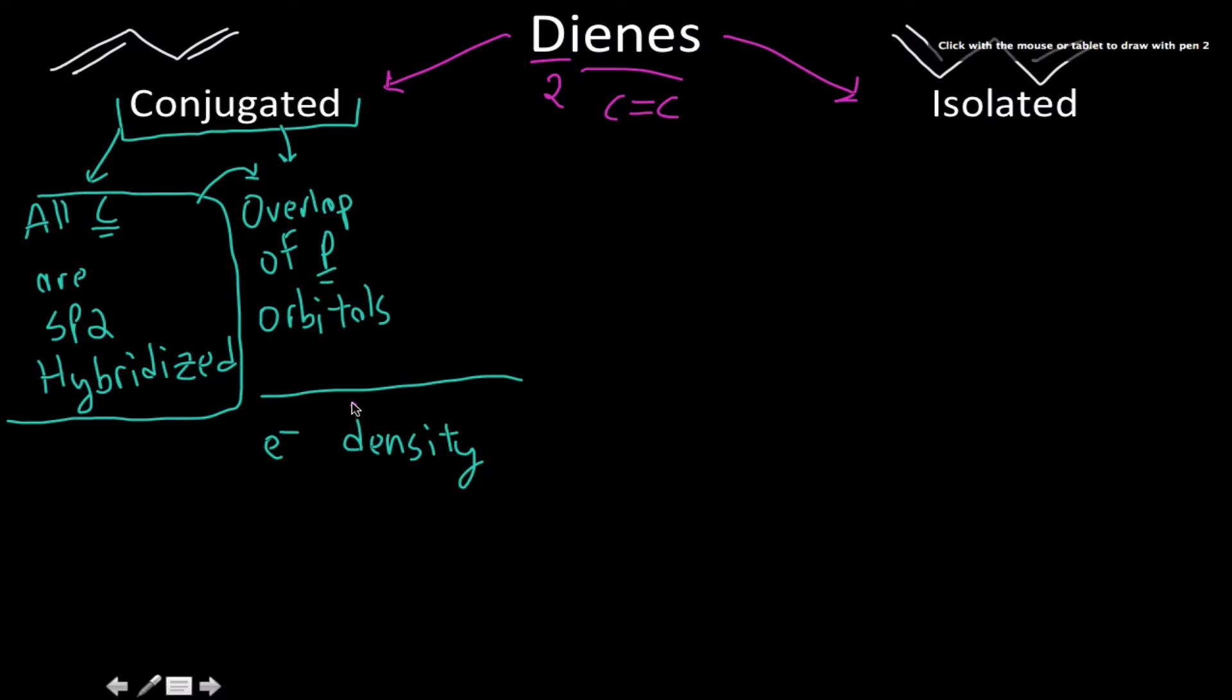It's kind of hard to write and talk at the same time. It's going to delocalize the electron density, which is pretty nice. So because of that, because we have both sp2 hybridization and overlapping of p-orbitals, these can, generally speaking, we can say that they are more stable than their isolated counterparts.